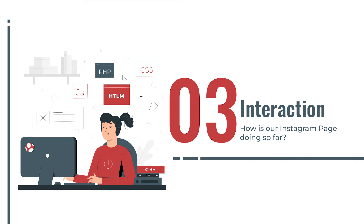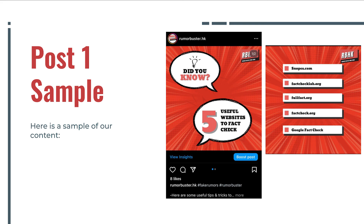Now we will be talking about Section 3: the interaction on our Instagram page. Here's a sample of the content we produce. This post is about resources that we can use to help fact-check. It has some websites that focus on fact-checking. In our case, it can help when it comes to sourcing where the rumors come from.